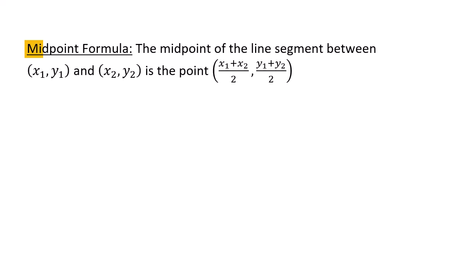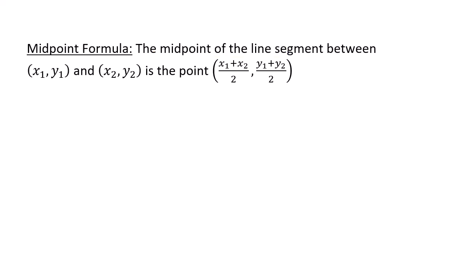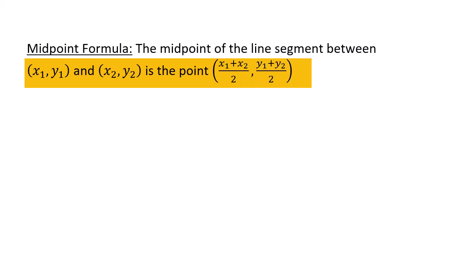Let's finish up by talking about the midpoint formula, which finds the midpoint of a line segment between the points (x1, y1) and (x2, y2). The midpoint is found by taking the averages: the x-coordinate is (x1 + x2) / 2, and the y-coordinate is (y1 + y2) / 2.